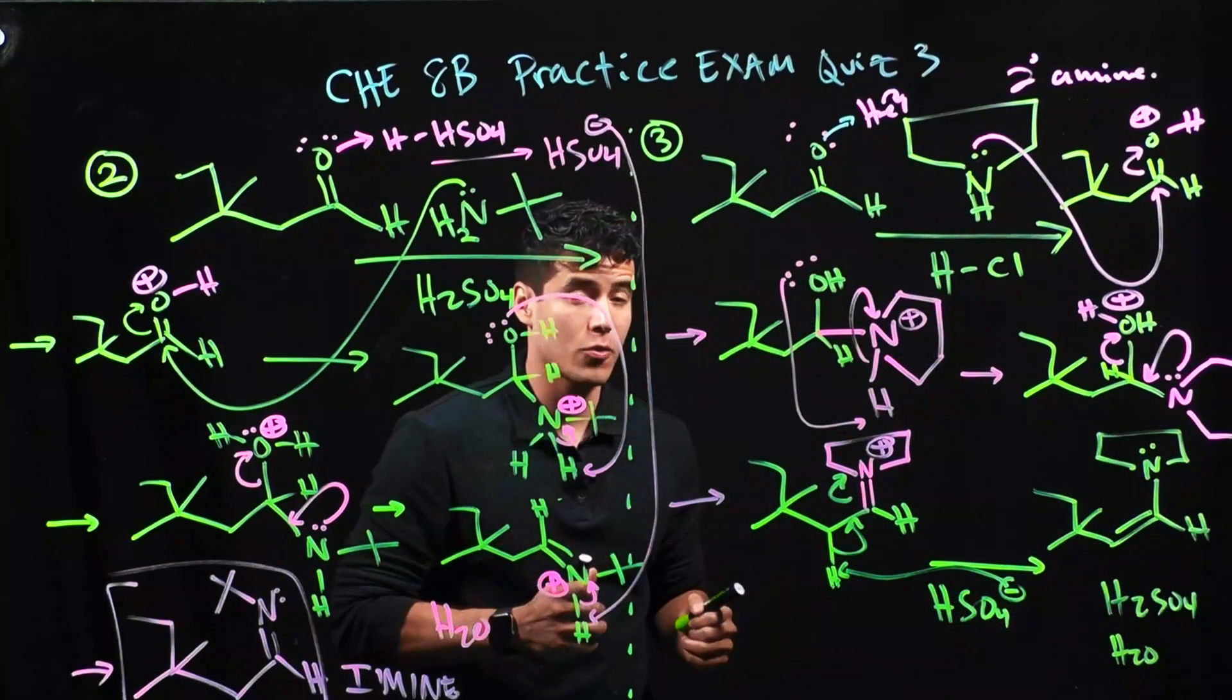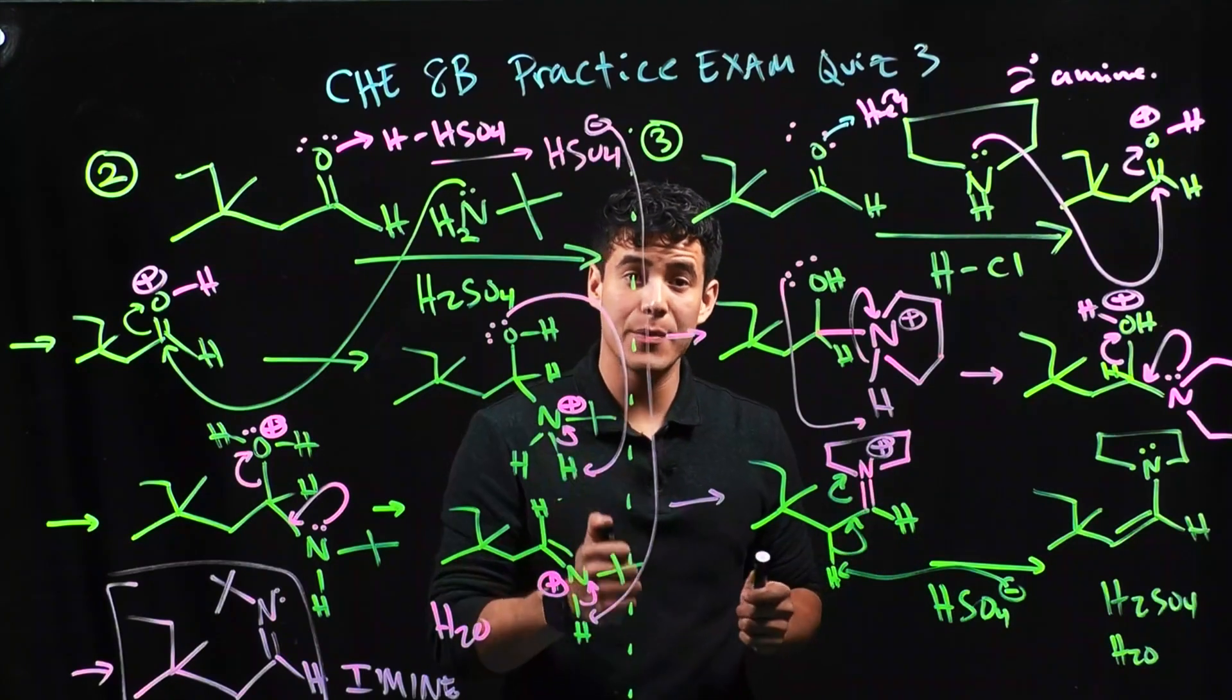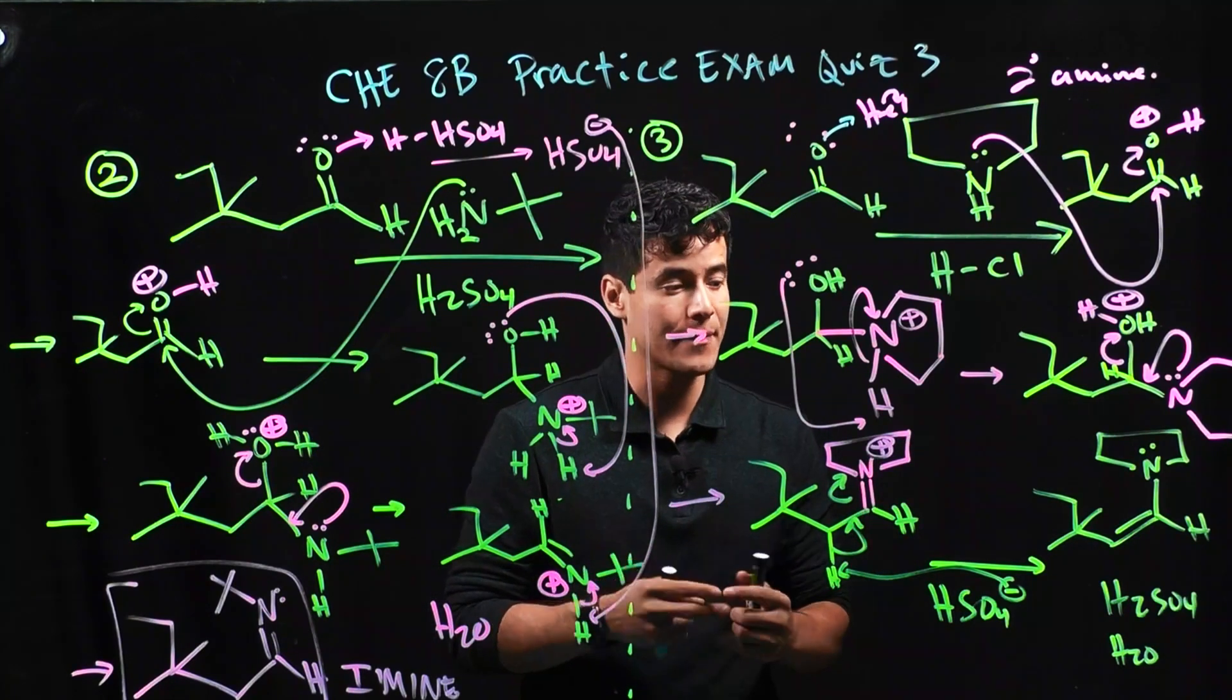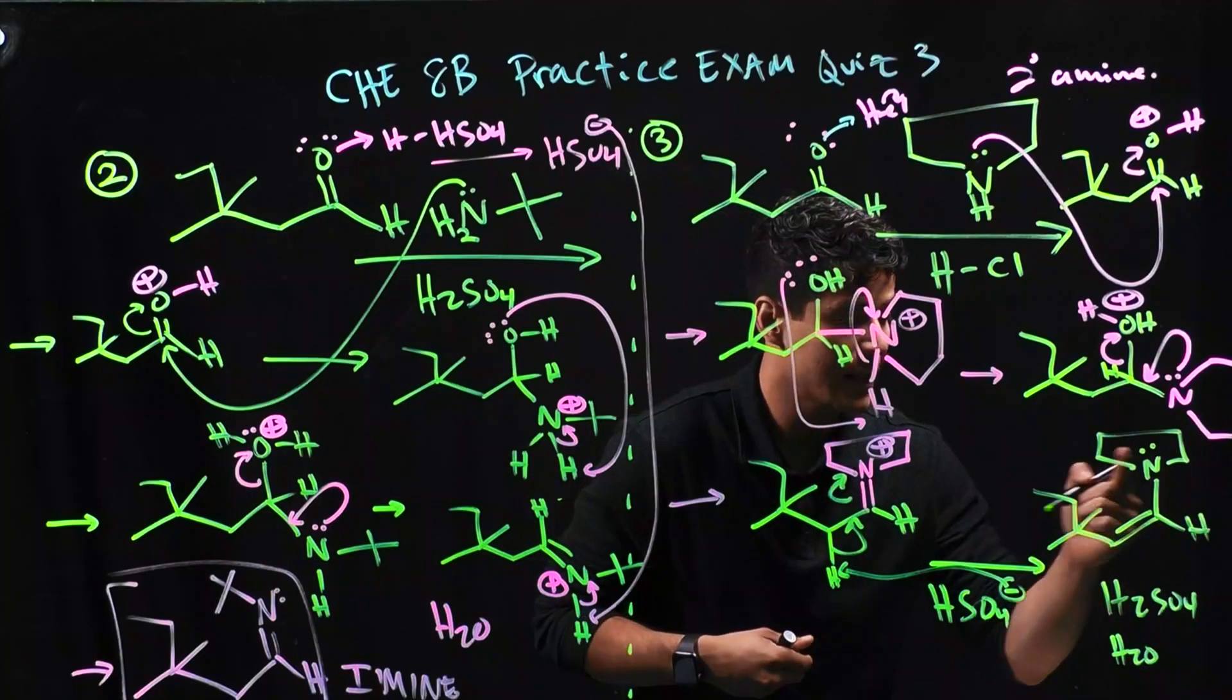And there you have it. We just formed our enamine. Enamine simply means alkene and amine. And here you have an alkene and your amine group.